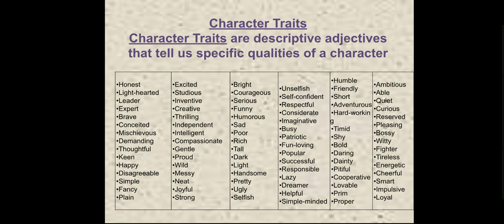As we discussed about character traits earlier, these are descriptive adjectives — they tell us more about the character. Words like honest, light-hearted, leader, expert, brave, conceited, mischievous, demanding — pause the video and look at all these words, because they give you an idea of how to describe a character and how to identify character traits. If I say the man is quite happy, I need detailed support from the text to prove that idea — it's not just saying he's happy.